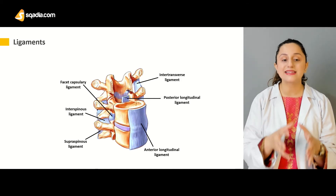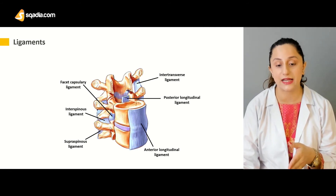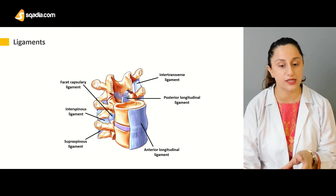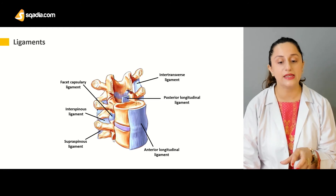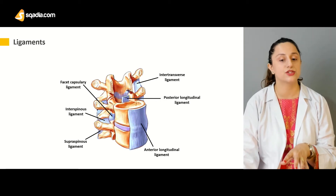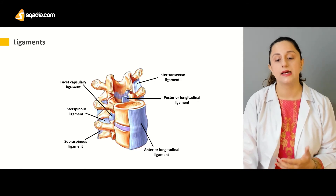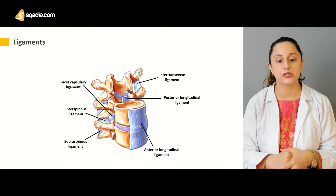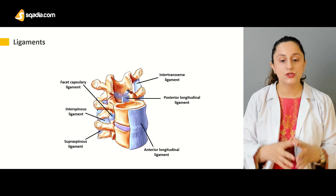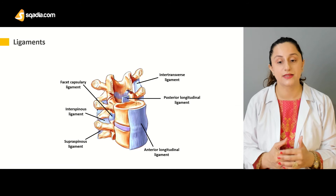Finally, we have the facet capsulary ligament. This facet capsulary ligament is attached to the superior articular facets. We have two articular facets: the superior articular facet and the inferior articular facet. So the facet capsulary ligament is attached between the superior articular facet and the inferior articular facet of the corresponding vertebra — present between the two adjacent facets of the vertebra.